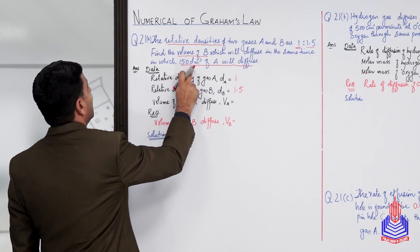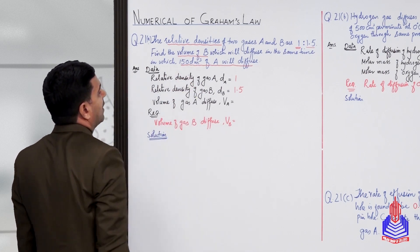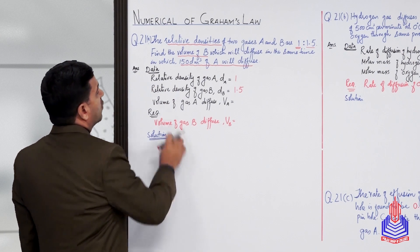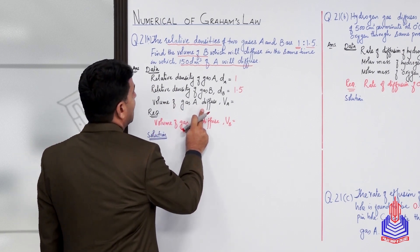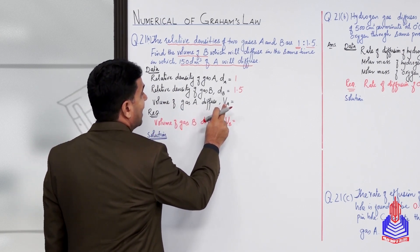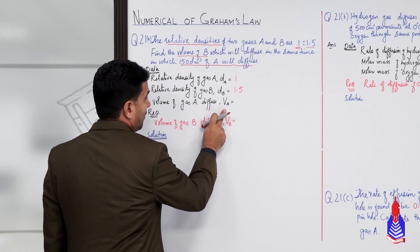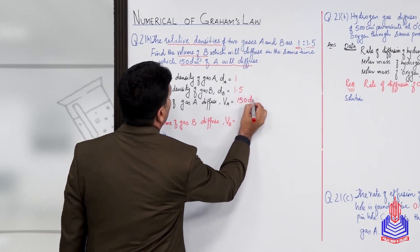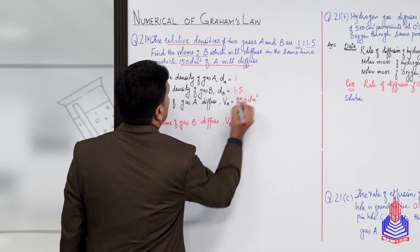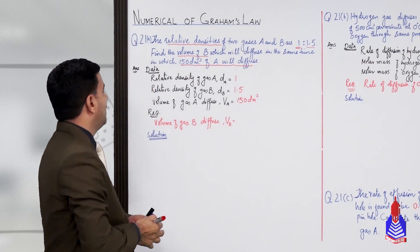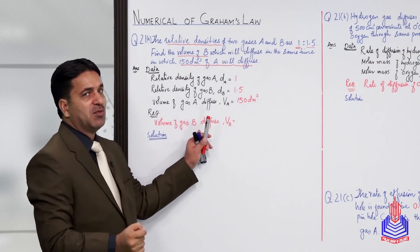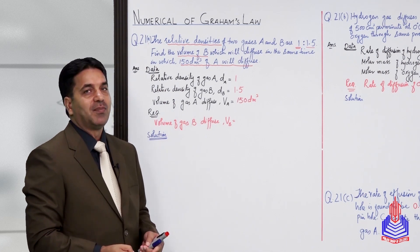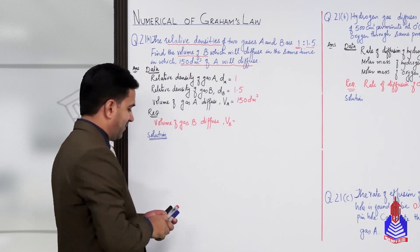When dm³ appears, it indicates volume. So the volume of gas A that diffused — that is vA — is 150 dm³. Now, students, I have to find the volume of B that diffuses, meaning I need to find vB. Now let's move toward Graham's Law.